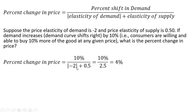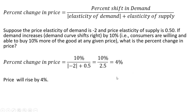Using this formula, we have a 10% increase in demand. The demand curve shifts right by 10%, and we plug in the price elasticity of demand in absolute value in the denominator, plus the price elasticity of supply in the denominator. Doing the math, we get an answer of 4%. So price will rise by 4% in this scenario.